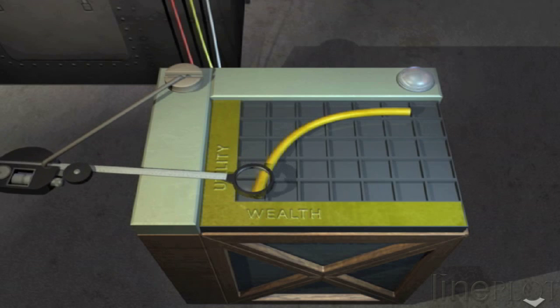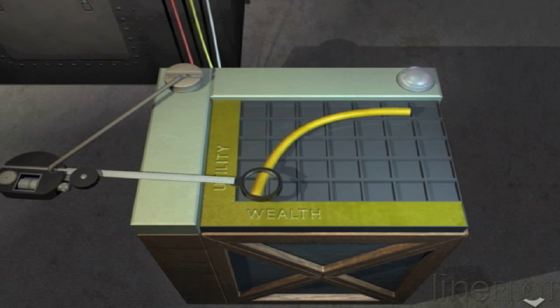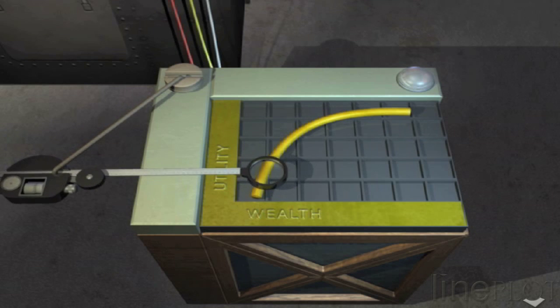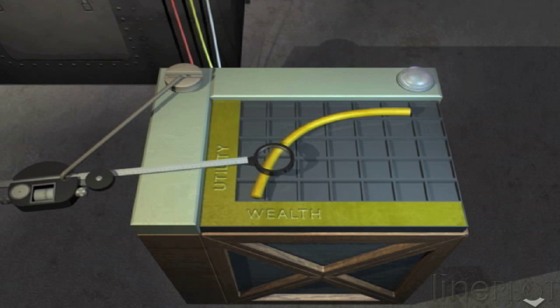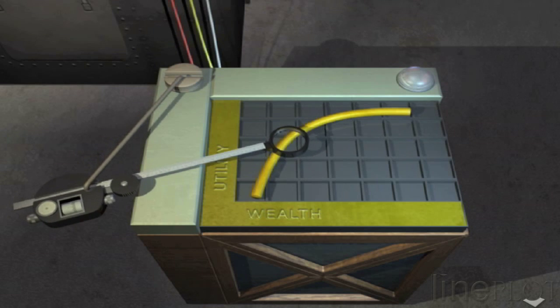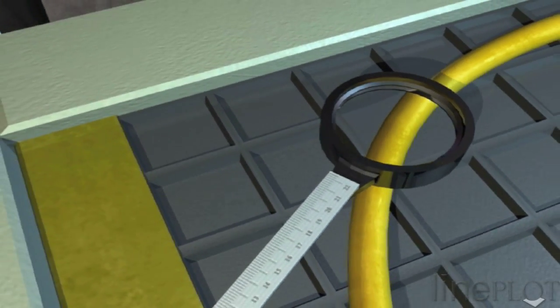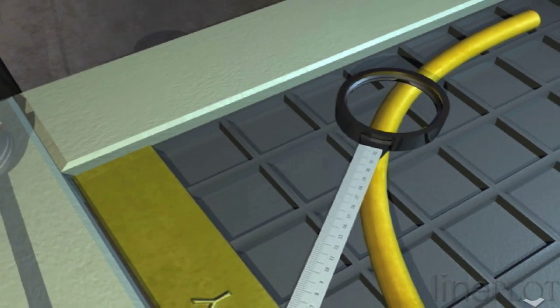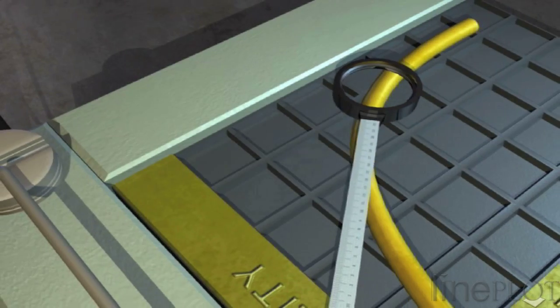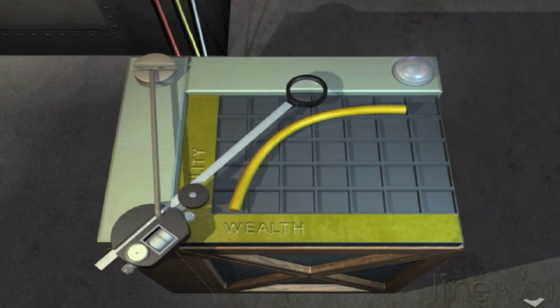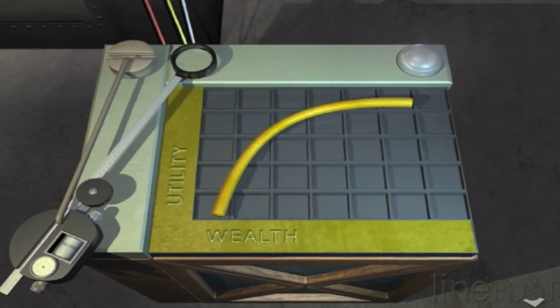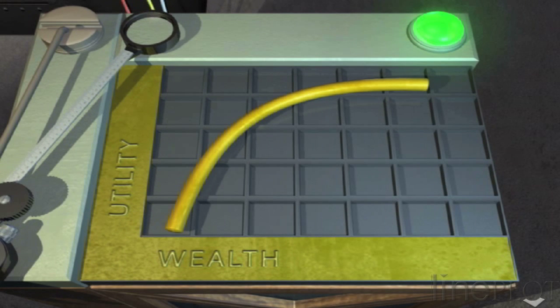These preferences are described by a utility function, which maps wealth onto a measure of happiness or satisfaction. Investors typically assume that utility functions are smooth and concave, which implies that happiness increases as wealth increases, but at a diminishing rate. If the relationship between wealth and happiness is best described by a smooth, concave curve,